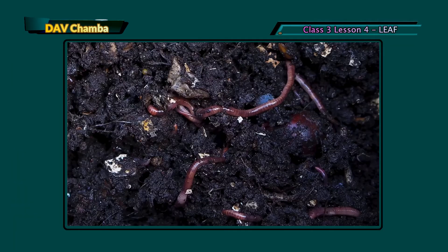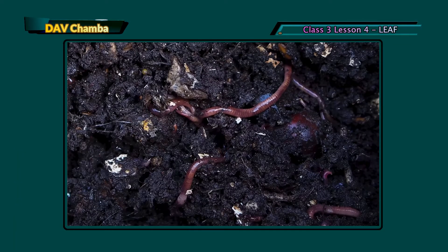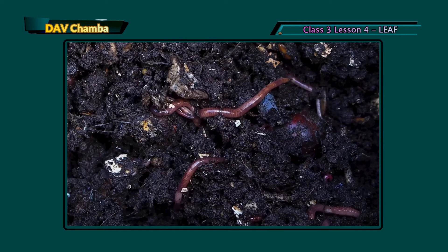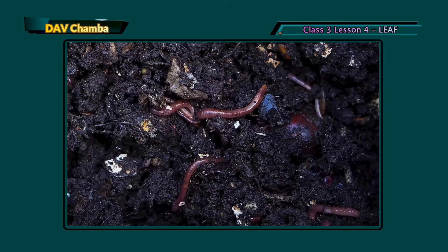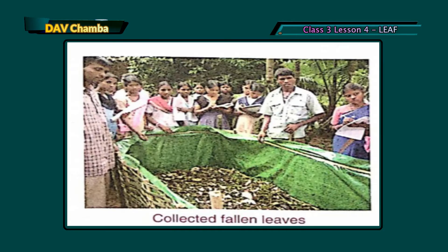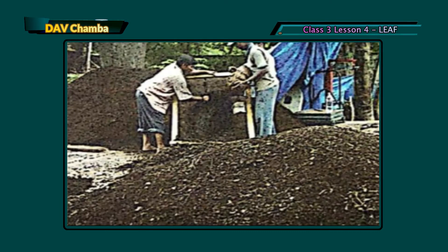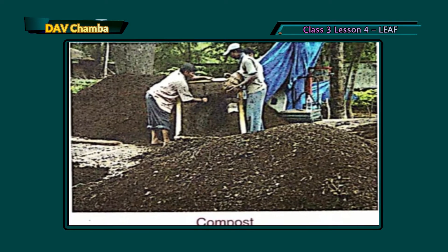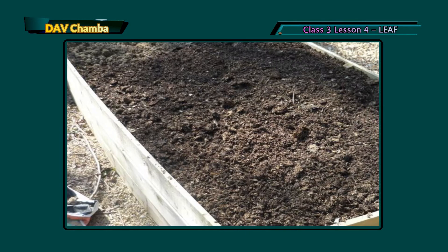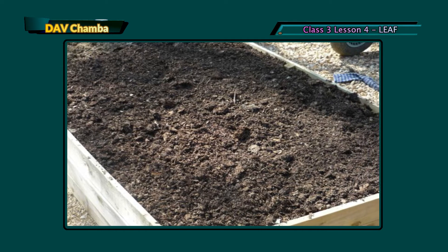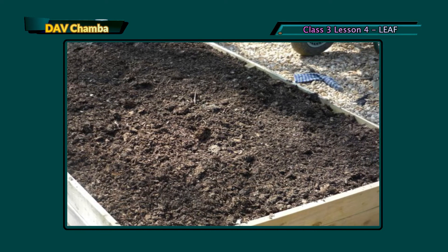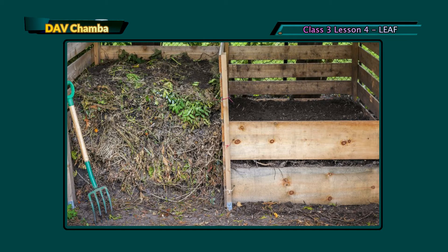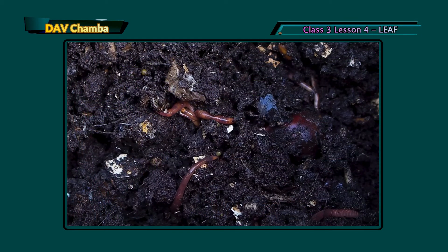How can compost be made? Collect fallen leaves from your surroundings along with kitchen waste. Dump the waste in a pit. Then cover the waste with moist soil. Leave this waste for 2 or 3 months, and then the compost will be ready.